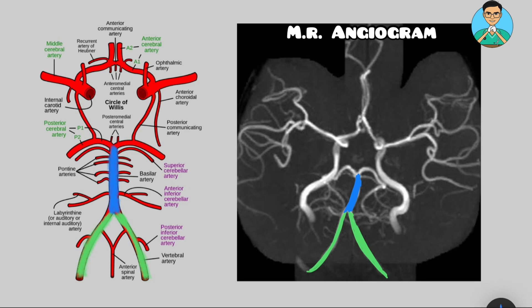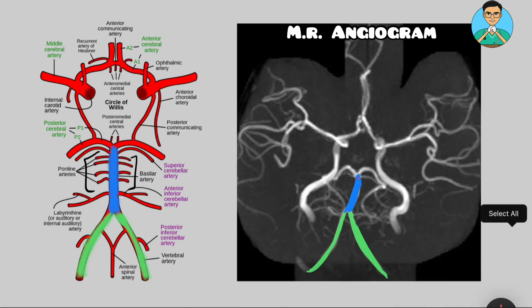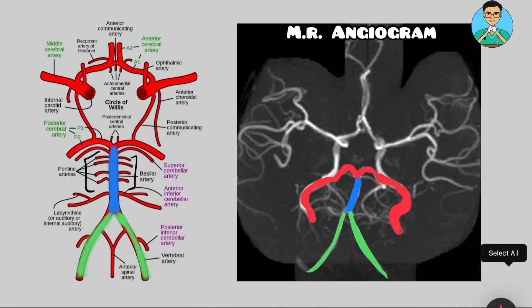Now from this basilar artery, in both the MR angiogram and the schematic diagram, you can see there are multiple branches which are coming out, which supply the different structures of the brain stem and the cerebellum. Now this basilar artery divides into two branches which are the posterior cerebral arteries, that you can see in the diagram over here.